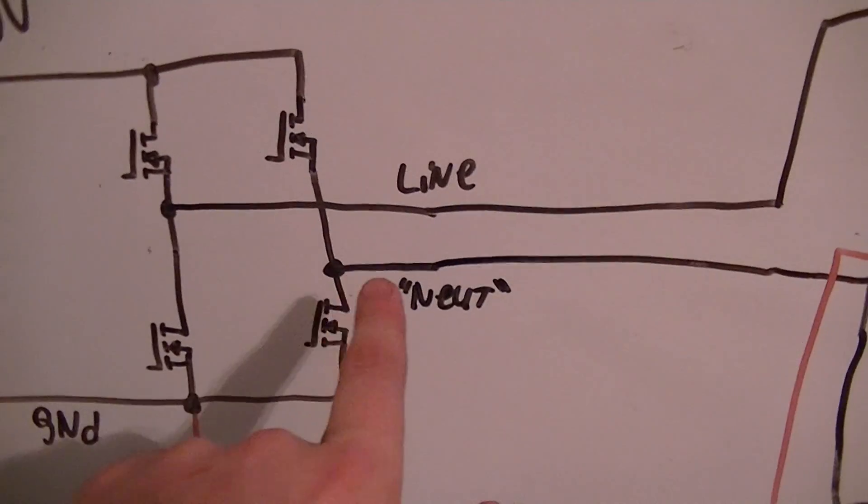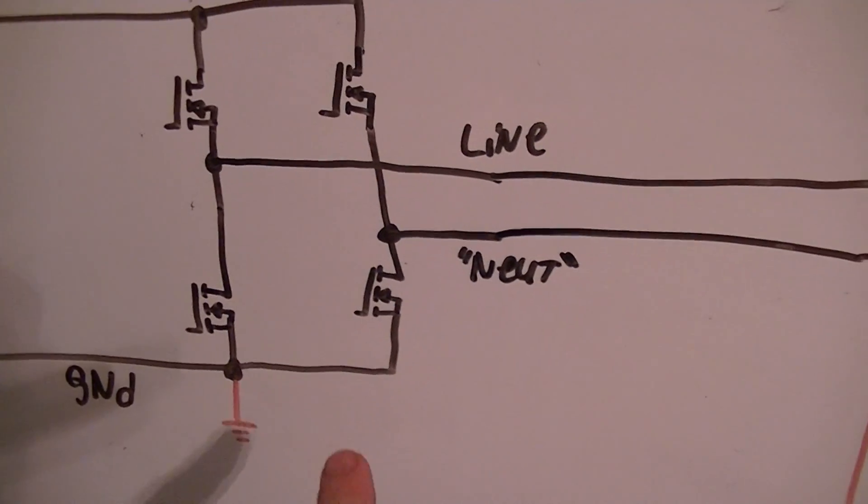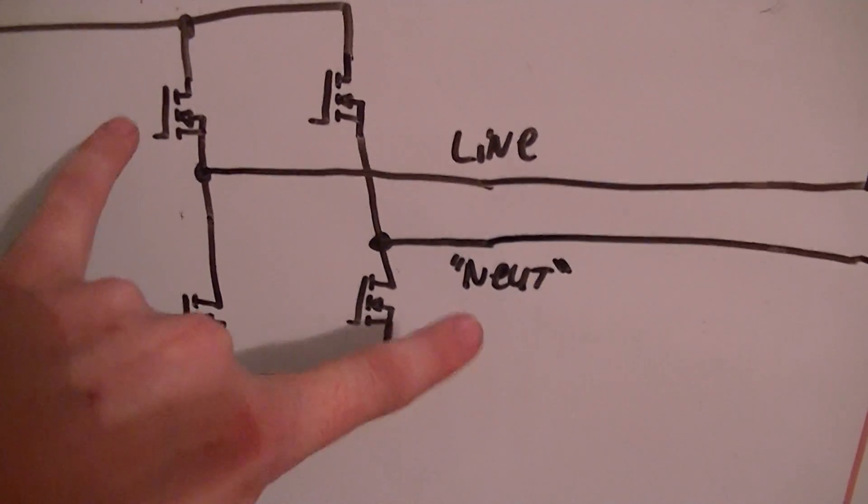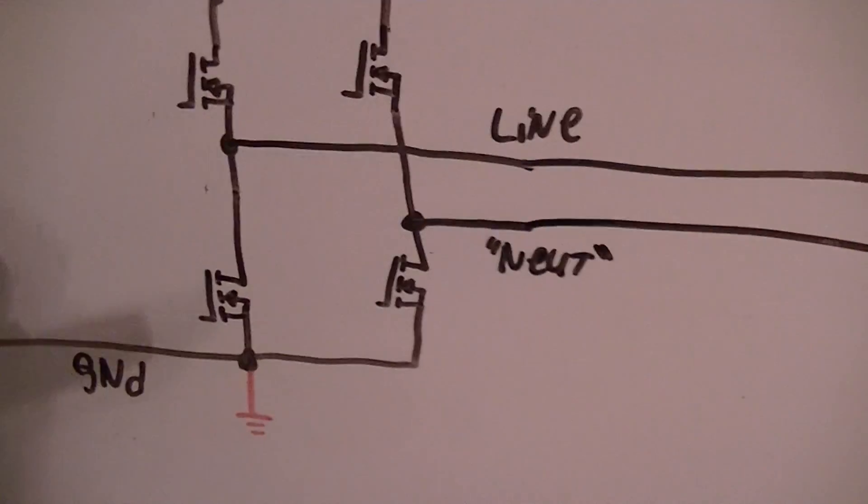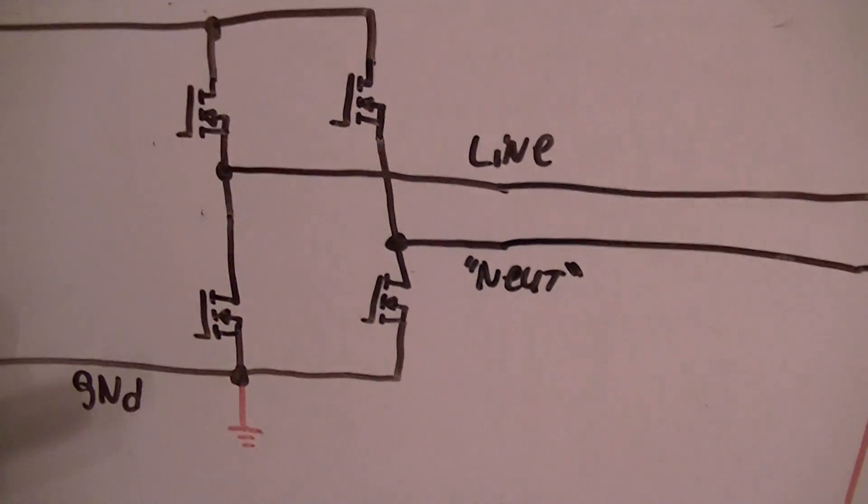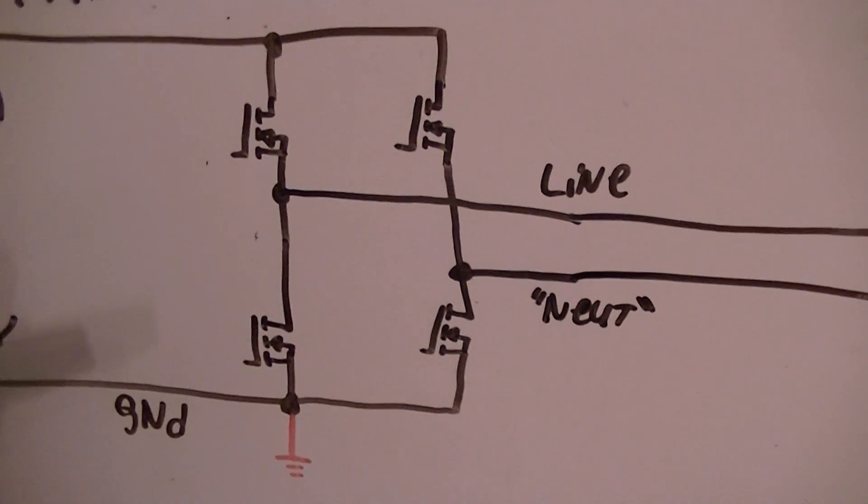The thing about this is that the neutral isn't really a neutral. When these two MOSFETs are conducting, it is at ground potential minus the minuscule potential drop across the MOSFET.